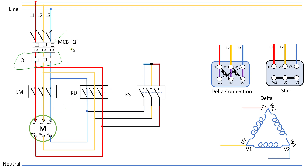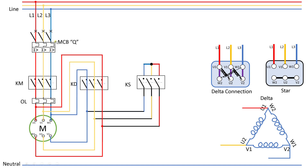This is another way to connect the star-delta power circuit. Taking the wiring after the overload relay and connecting it so that U1 and W2 are properly connected. This concludes our lesson on the power circuit for star-delta. Next, we will look at the control circuit. Thank you.